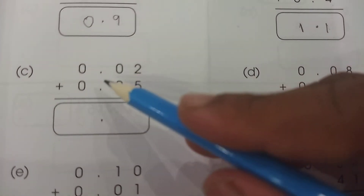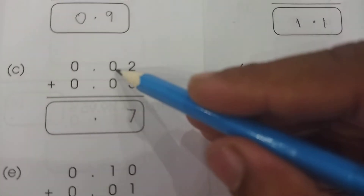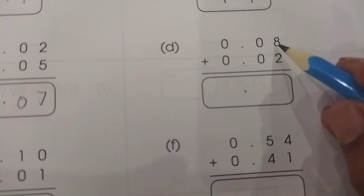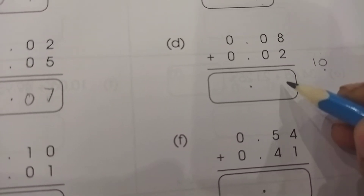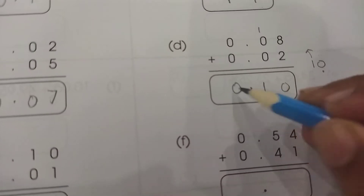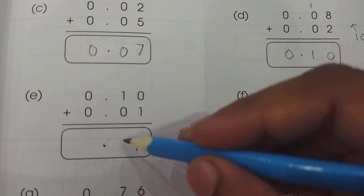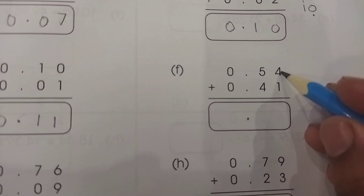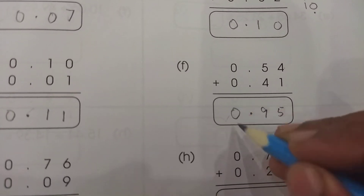Now we have two decimal place values — the hundredths. Two plus five gives us seven, and zero plus zero is zero, so the answer is 0.07. Similarly, eight plus two gives us ten — we write zero and carry one, giving the answer 0.10. And for zero plus one, one plus zero — the answer is 0.11. Then four plus one is five, five plus four is nine, zero plus zero is zero — the answer is 0.95.